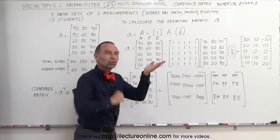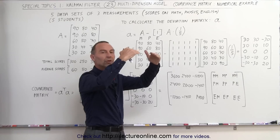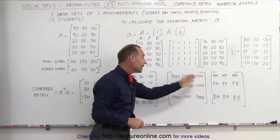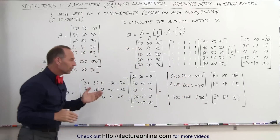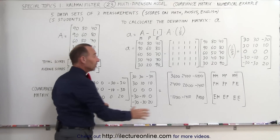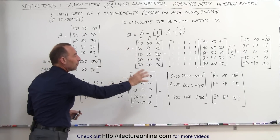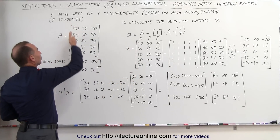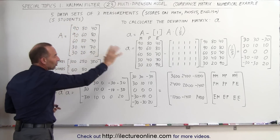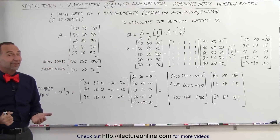So negative covariance elements simply mean that the variation is in opposite directions — if one scores high on one subject, they tend to score low on the other. If they tend to score high on both, there is a positive covariance. That's the meaning of the covariance elements. This is your covariance matrix — the P matrix — and notice how easy it is with matrices to arrive at the final values. We started with five sets of scores in math, physics, and English, and we found the covariances and variances using matrix multiplication. And that's how it's done.